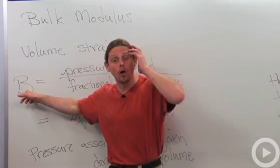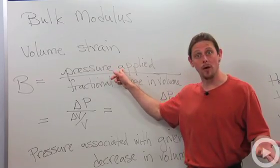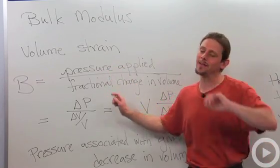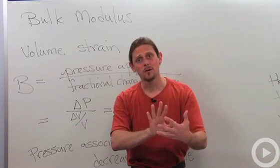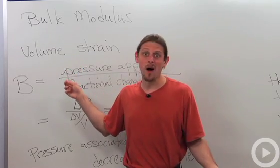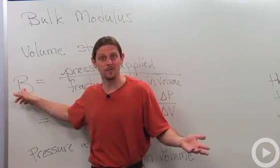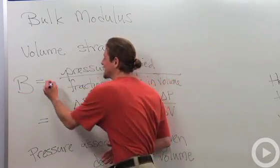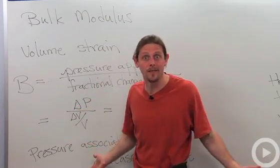As with all moduli, we'll define the bulk modulus as the pressure that we applied divided by the fractional change in volume. Now this is a little bit of an issue because we said if we apply pressure, the volume is going to get smaller. So if the top is positive, then the bottom is going to be negative, and I don't want to define this thing as a negative number, so I'm going to give myself a minus sign. We can do that because we're the ones that are defining the quantity in the first place.